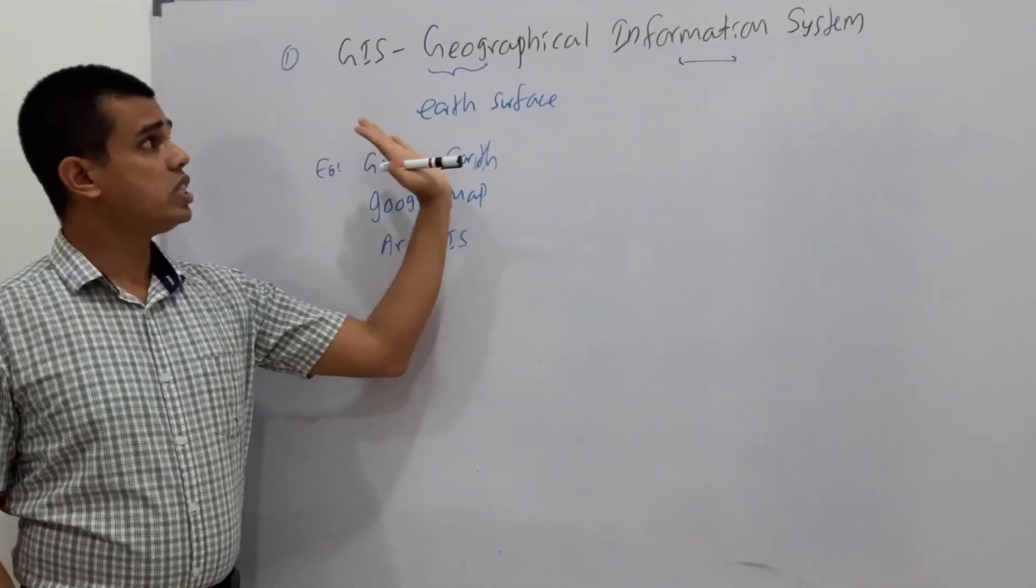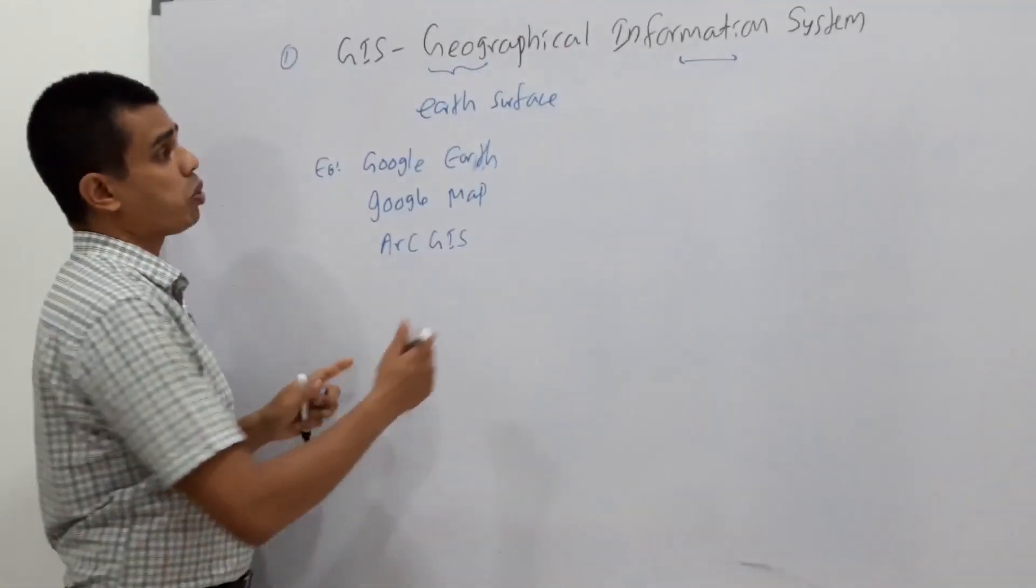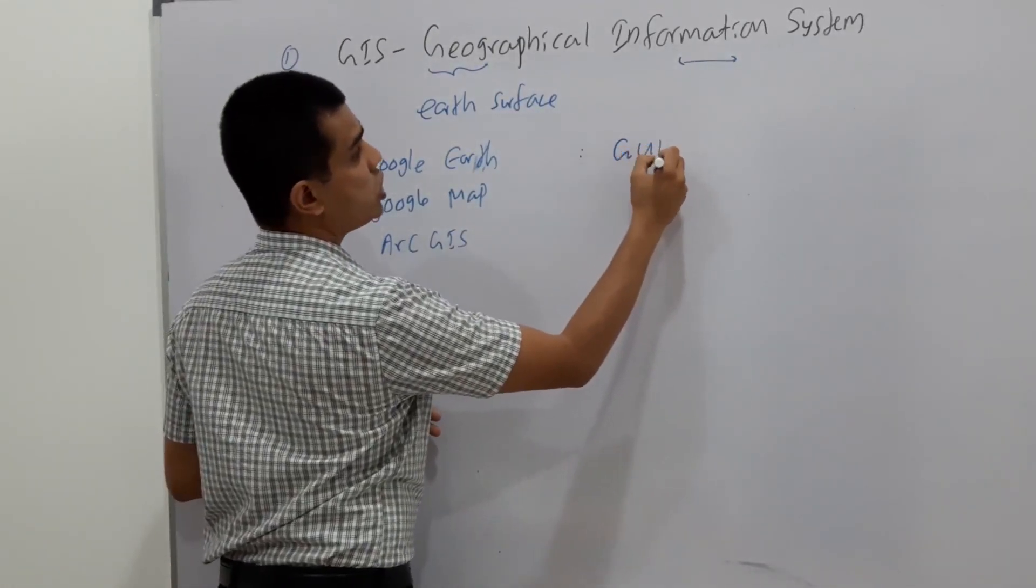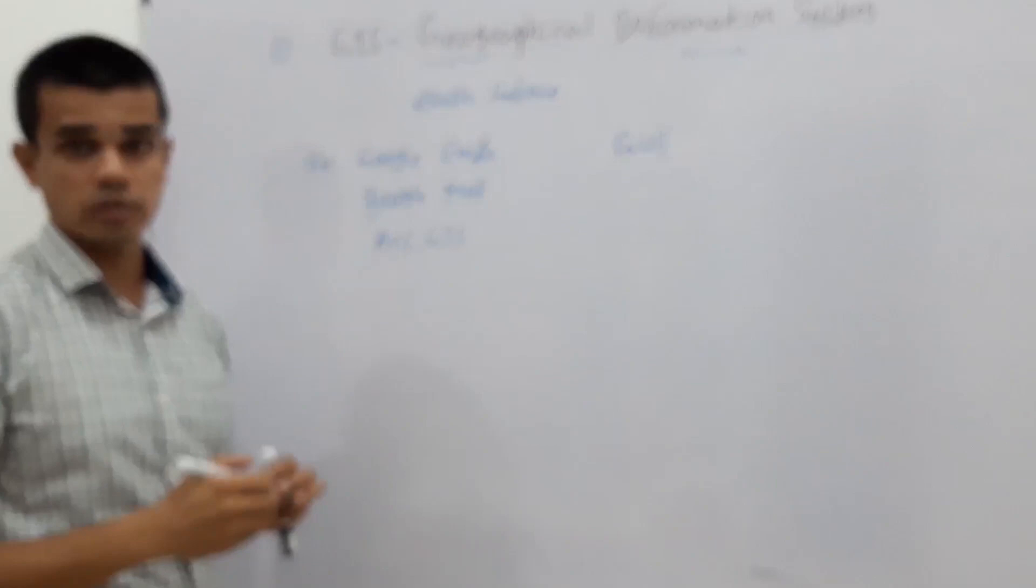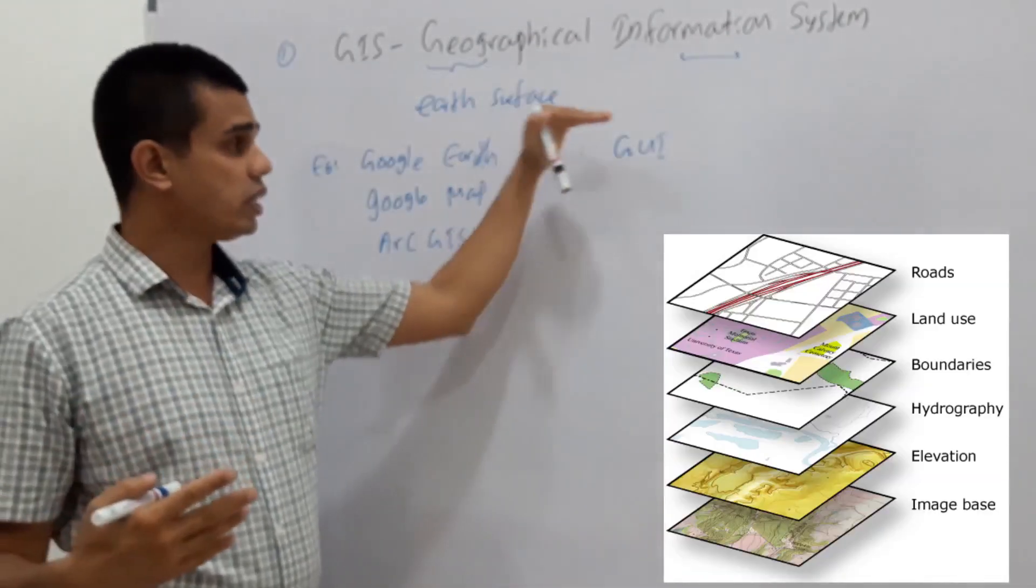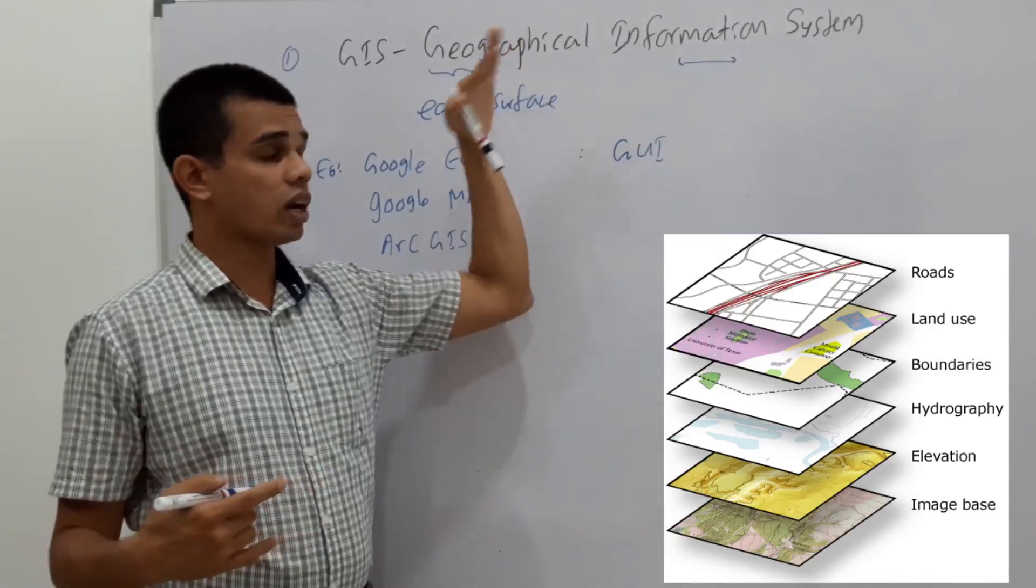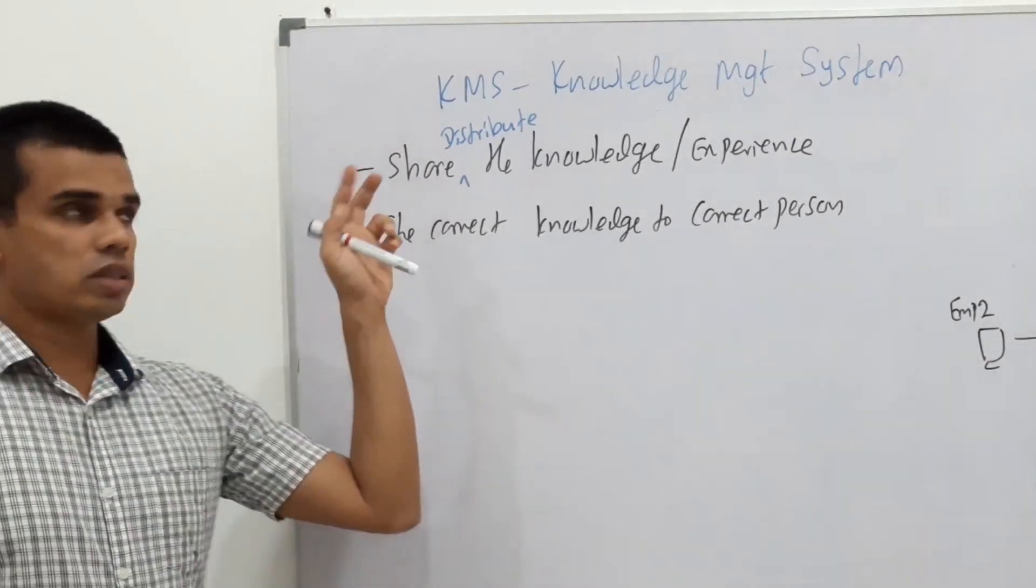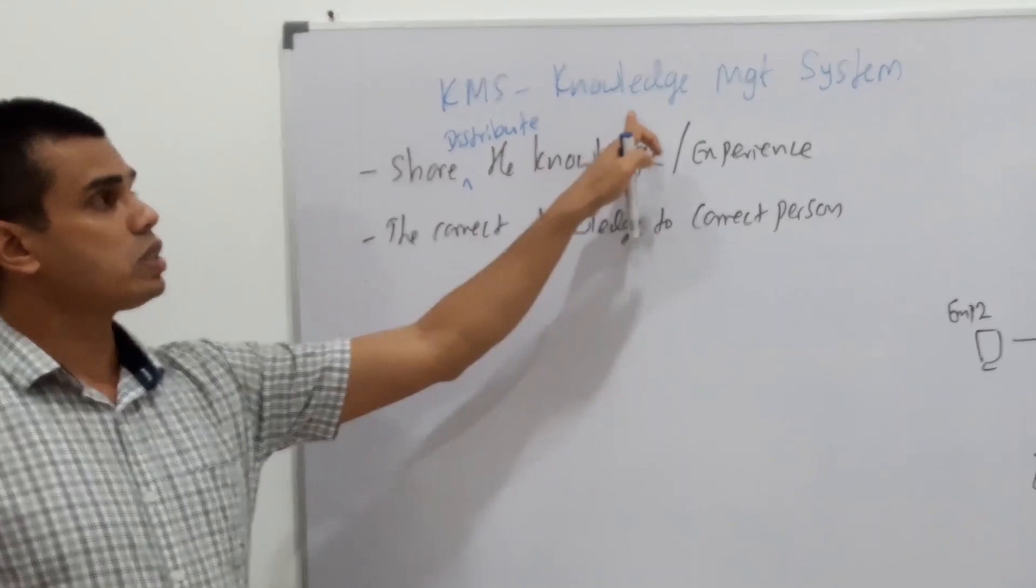The point is GIS software systems provide you details or information about the earth surface. All these GIS packages provide information in the form of GUI, graphical user interface. People can easily find the surface and images based on the graphical objects they use. Next is KMS, knowledge management system.